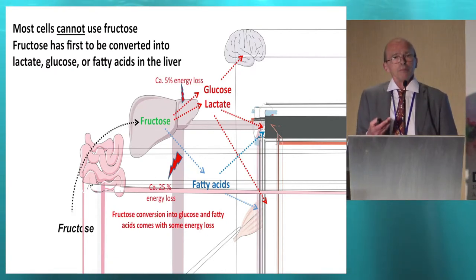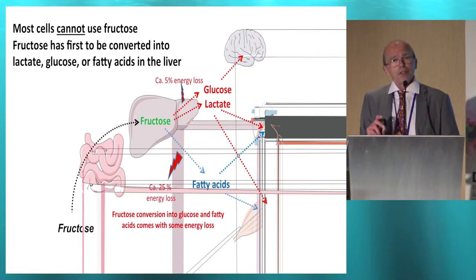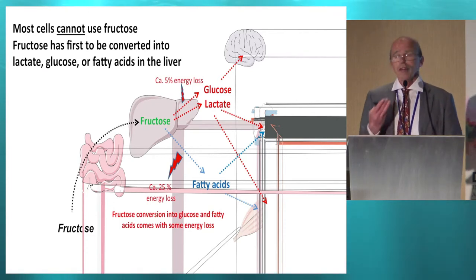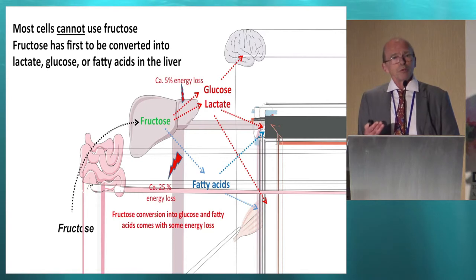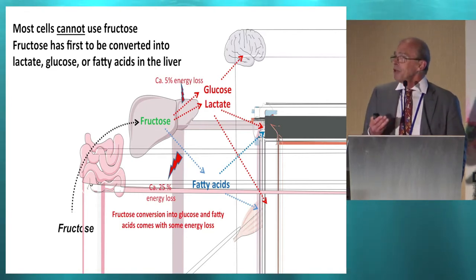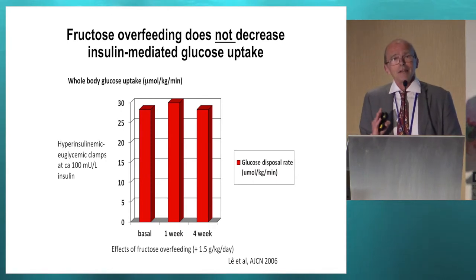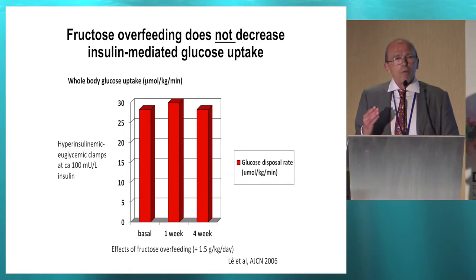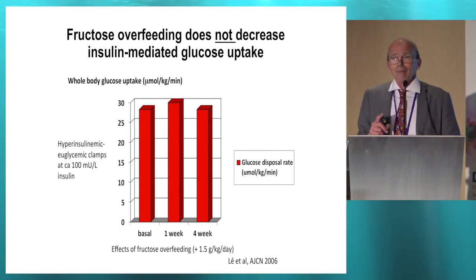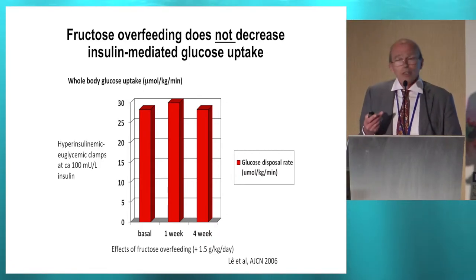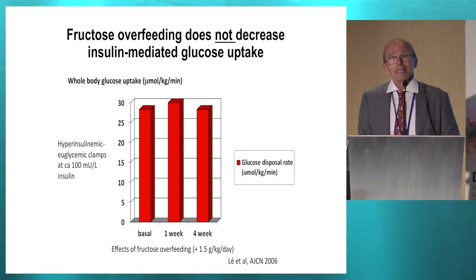So fructose is first converted into glucose and fat and then exported to be metabolized in other tissues. This comes at some cost: when you convert fructose into fatty acids, you lose about 25% of its energy content; when you convert it into glucose, you lose about 5%. Once you see fructose metabolism this way, it's no major surprise that it somewhat increases hepatic glucose production — though it increases hepatic glucose production without raising fasting blood glucose — and may also increase blood triglyceride concentrations to some extent.